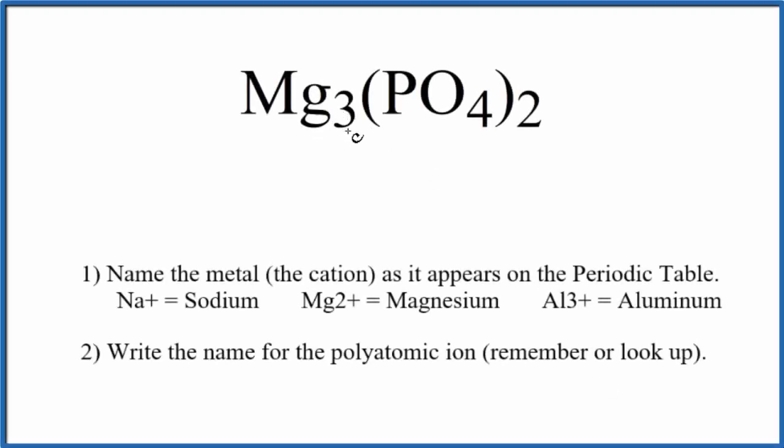To write the name for Mg₃(PO₄)₂, we first need to recognize that we have this PO₄ here. This is called the phosphate ion, so we have two of these phosphate ions, and they're bonded to magnesium.